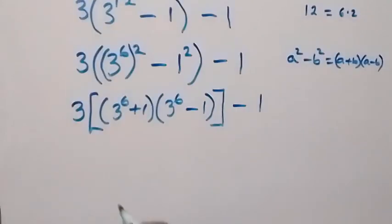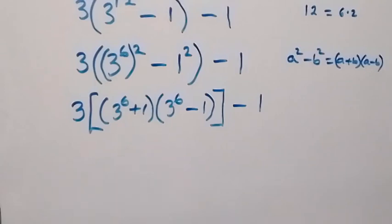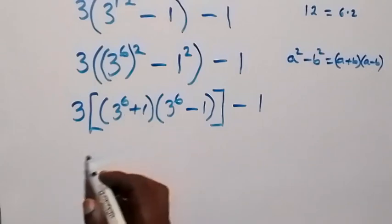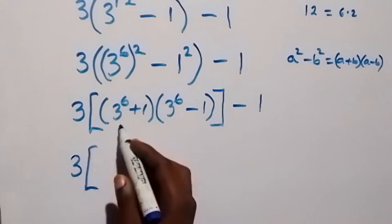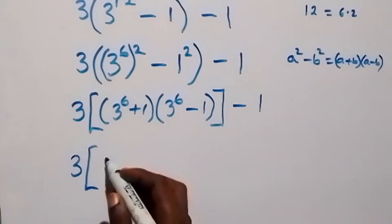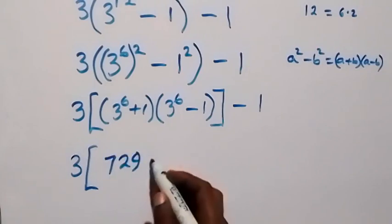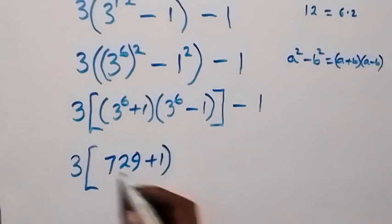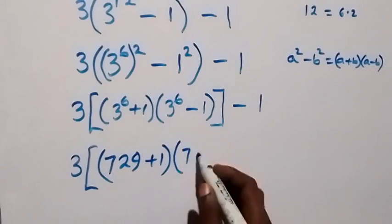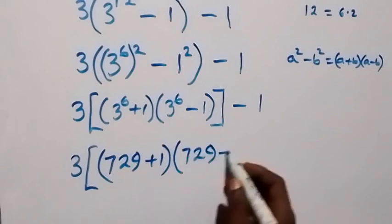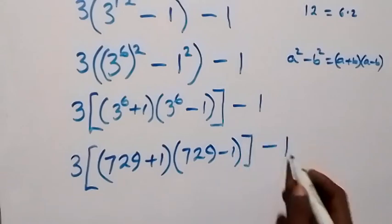Now, 3 raised to power 6 means 3 multiplied by itself 6 times, which gives us 729. So we have 3 into brackets: 729 plus 1, and also 729 minus 1, then close bracket, minus 1.